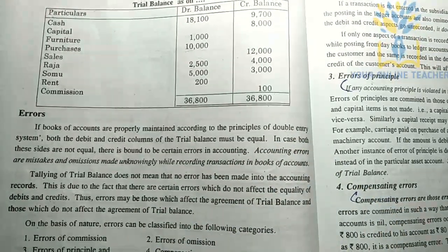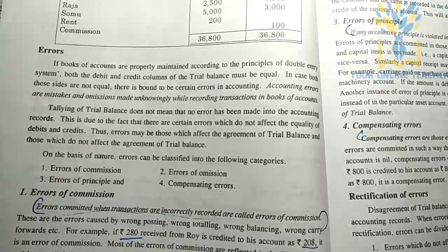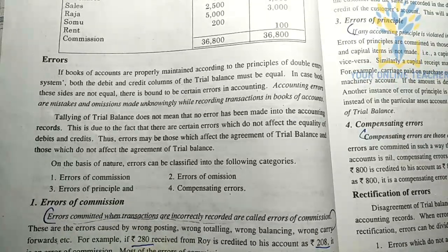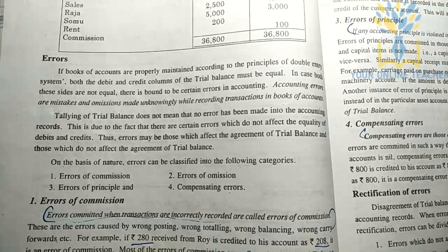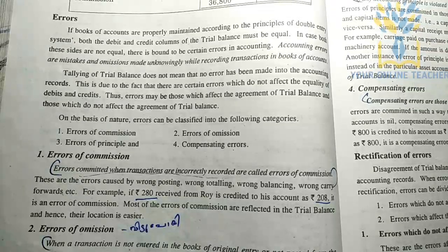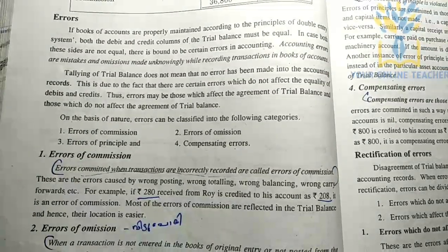If the totals are accurate, this is not an errors situation. Next, we will talk about errors. What are errors? If you have a mistake or an omission, that is an error. The types of errors are: errors of commission, errors of omission, errors of principle, and compensating errors.